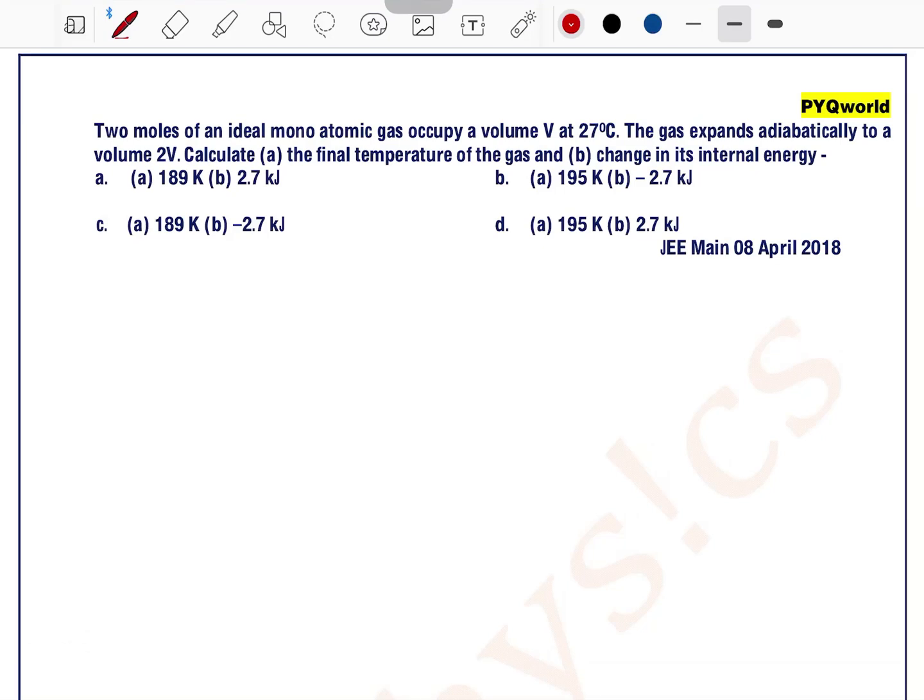2 moles of an ideal monoatomic gas occupy volume V at 27 degrees Celsius. The gas expands adiabatically to volume 2V. Calculate the final temperature and change in its internal energy.